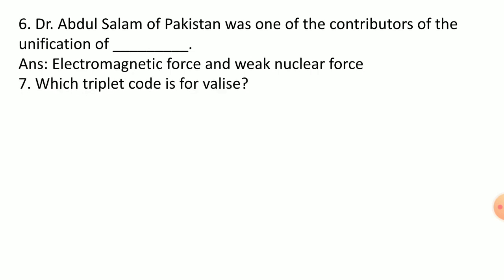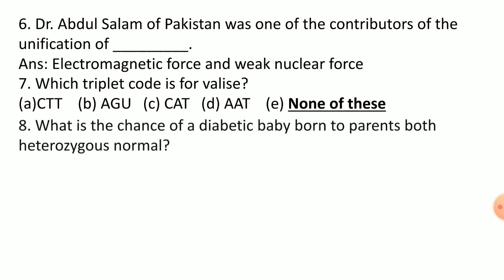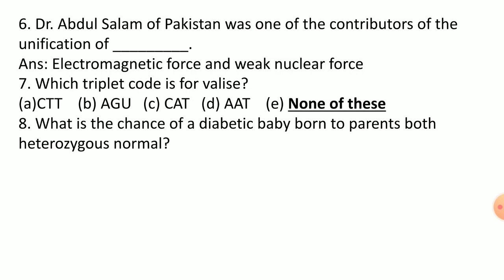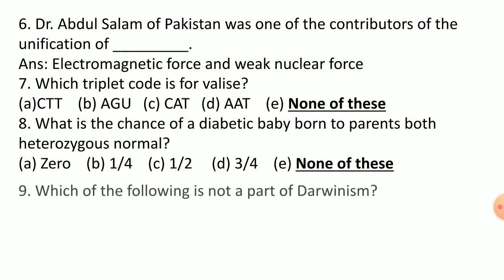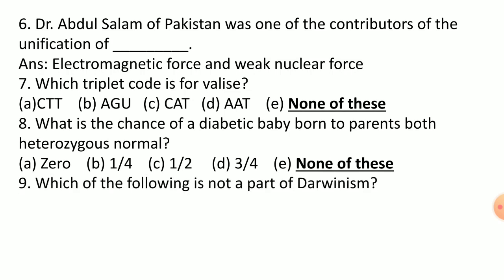Which triplet code is fertilized? What is the chance of a diabetic baby born to parents both heterozygous normal? Zero, one over four, one over two, one over three, three over four, none. Which of the following is not a part of Darwinism: inheritance for acquired characters.